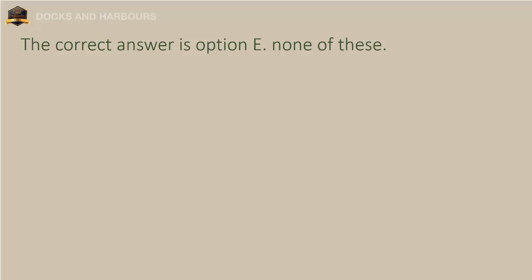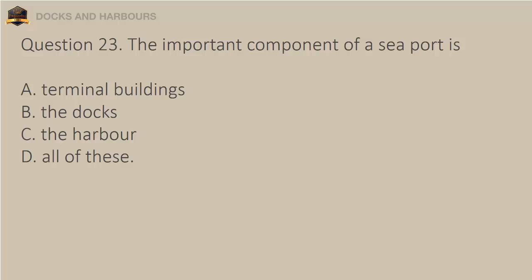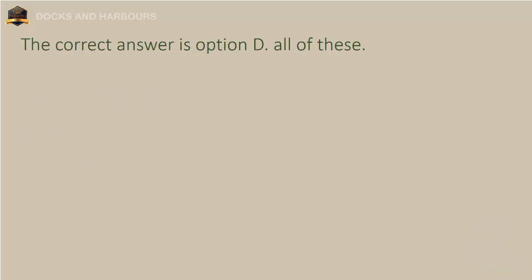Question 23. The important components of a seaport are: A. Terminal buildings, B. The docks, C. The harbor, D. All of these. The correct answer is option D: All of these.